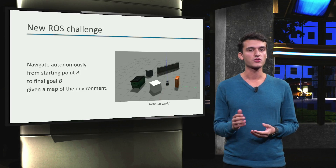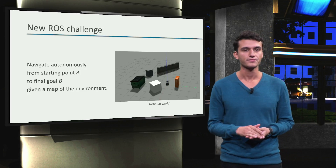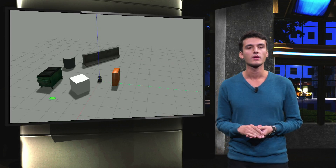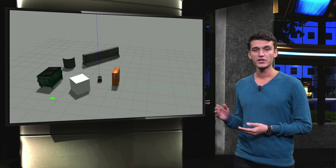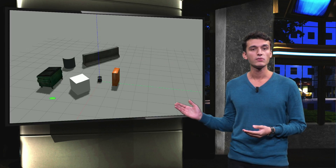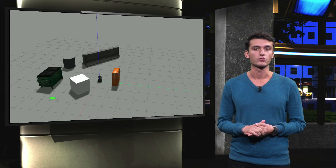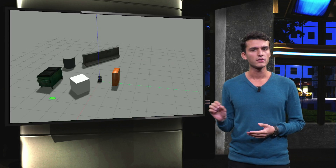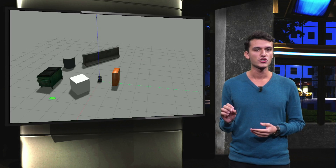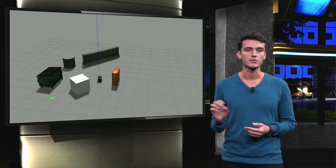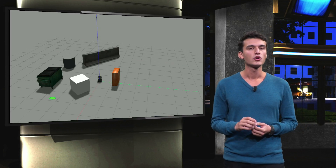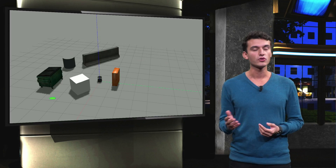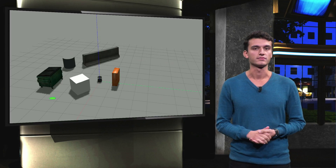Let's have a closer look. In this picture we see our Gazebo simulation of the robot world. The robot is at the middle and we want it to navigate to the position of the green circle autonomously. So what do we need to achieve this?